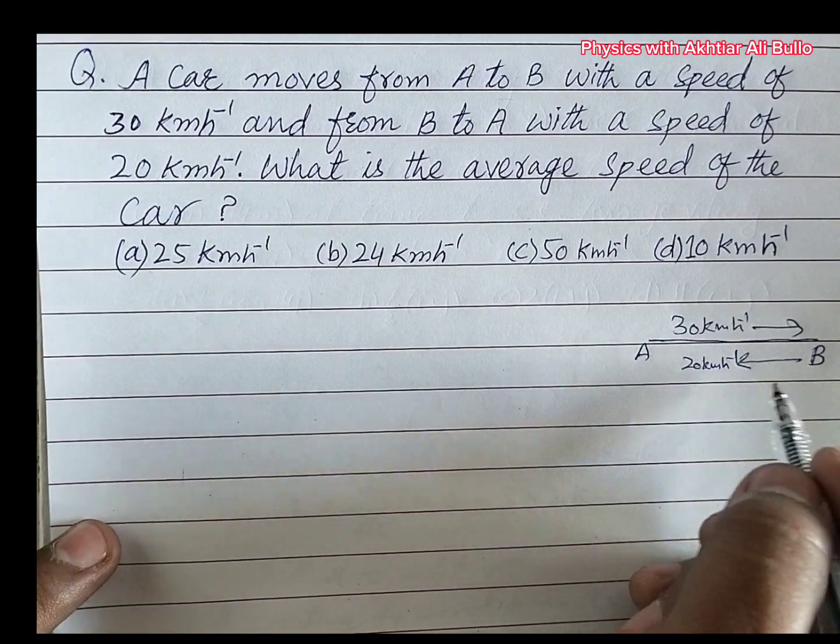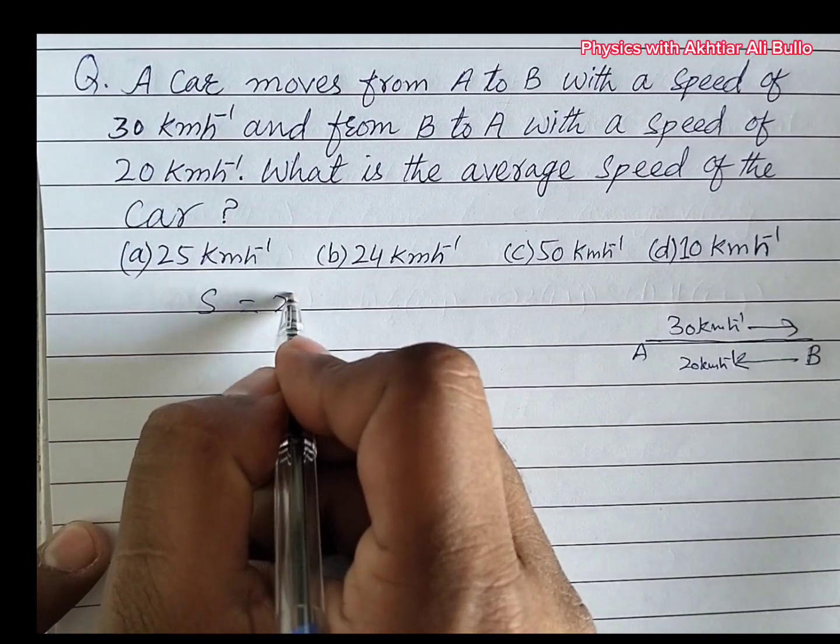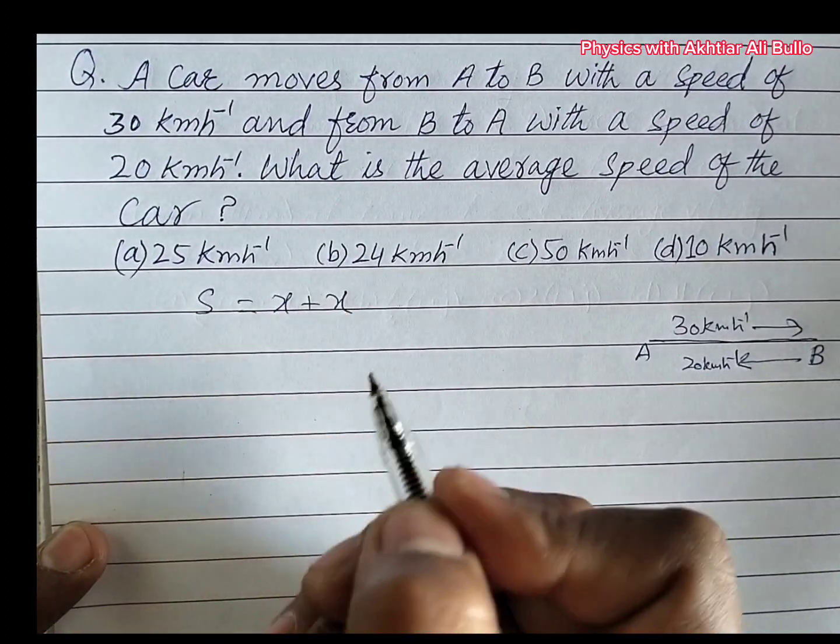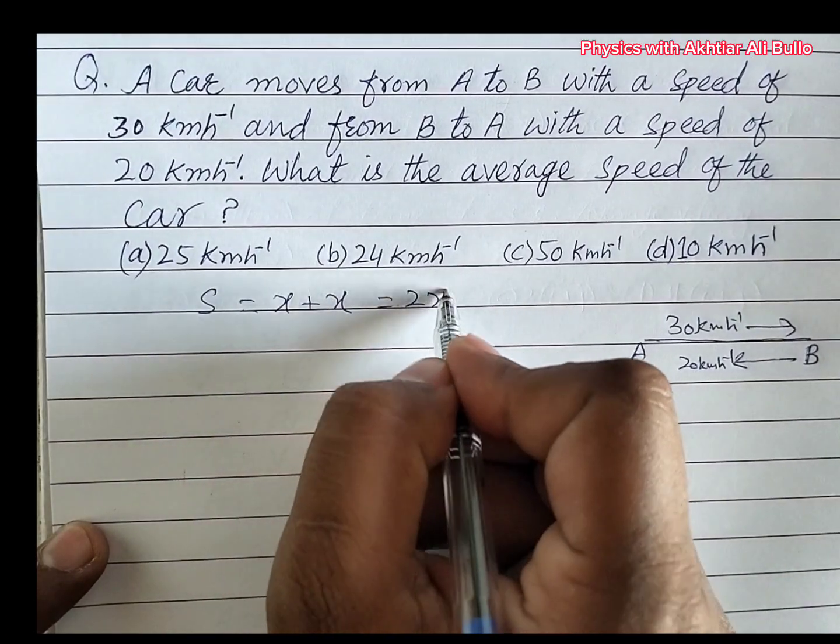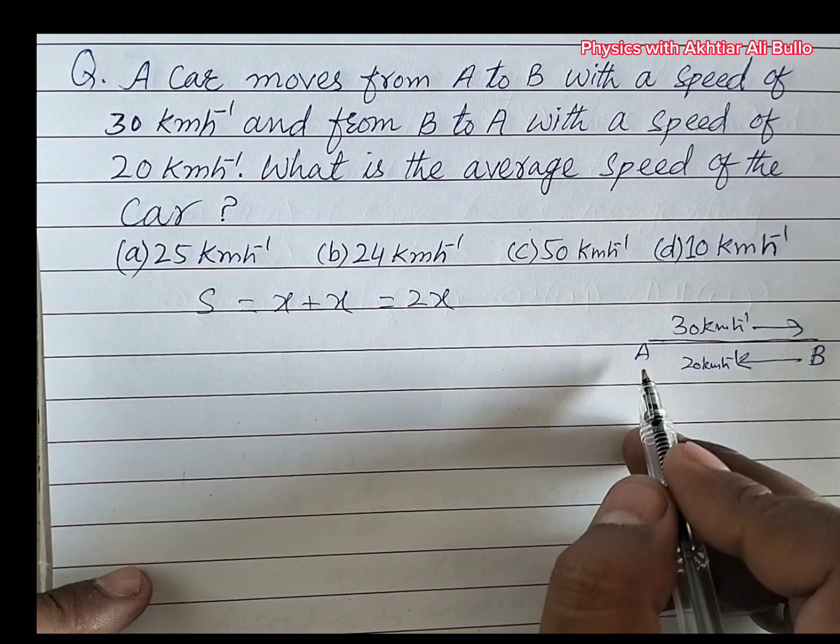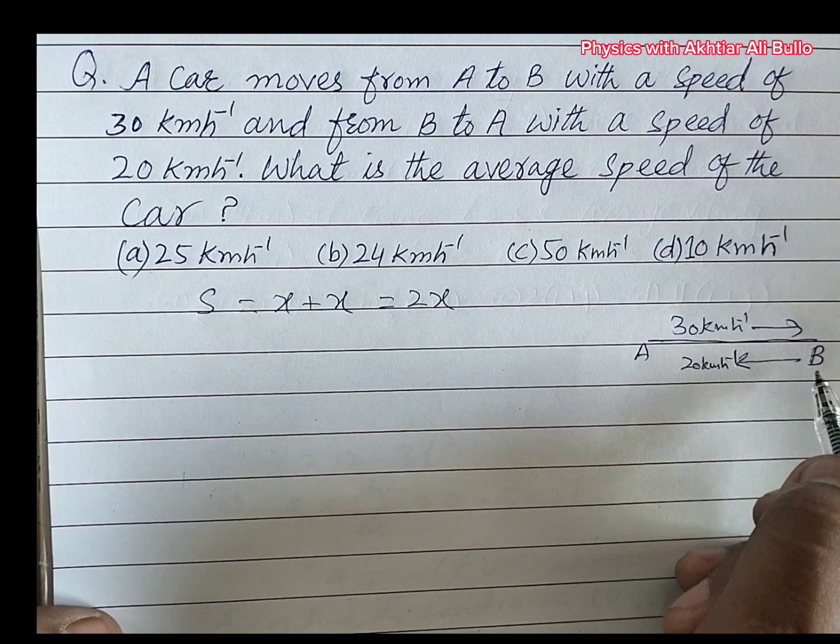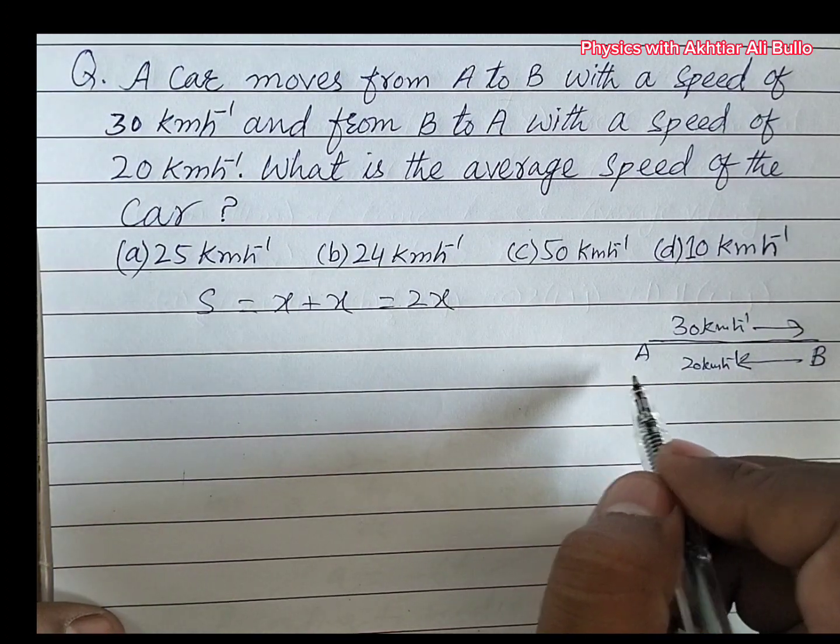we will calculate total distance. S is equal to x plus x, so it will be 2x. So total distance is 2x. The first x is from A to B and the second x is from B to A.